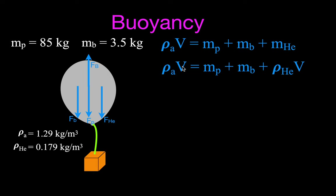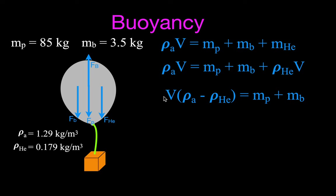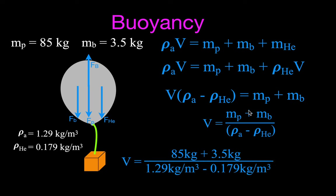We subtract the density-of-helium times volume term from both sides and factor out volume, giving: volume times (density of air minus density of helium) equals mass of payload plus mass of balloon. Dividing both sides, volume equals (mass of payload plus mass of balloon) divided by (density of air minus density of helium). Substituting in: (85 + 3.5) / (1.29 − 0.179), which gives approximately 80 cubic meters.